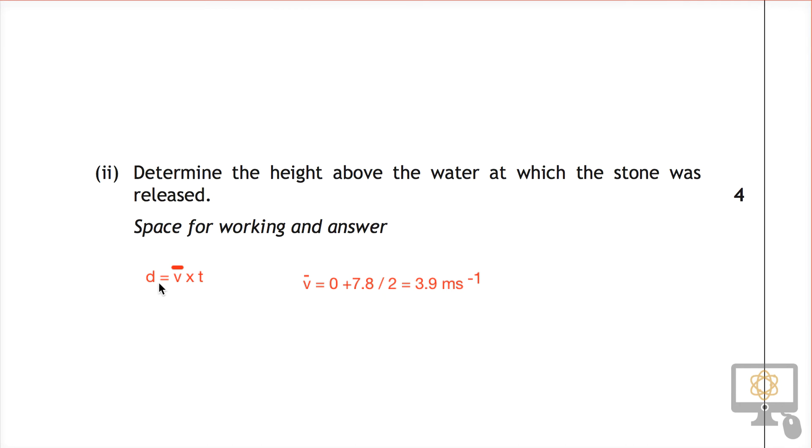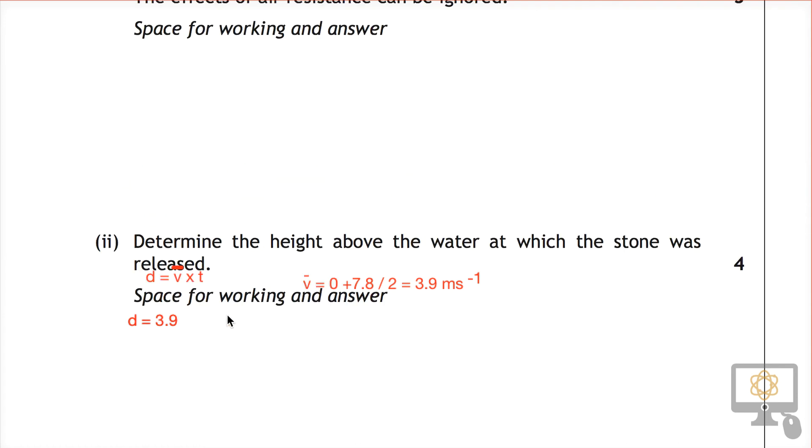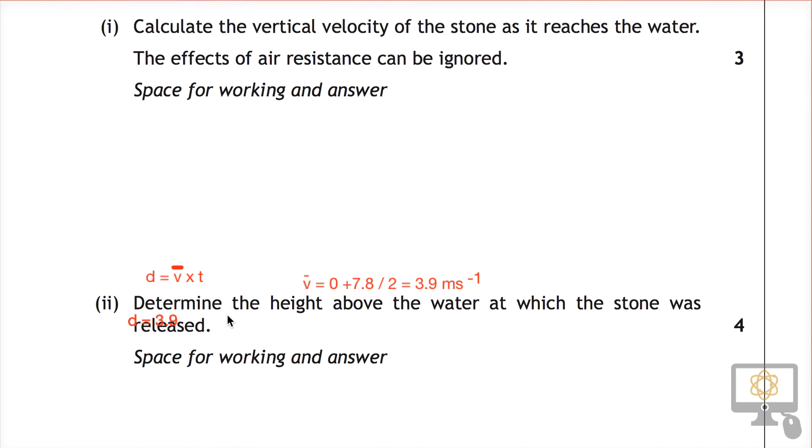Now we can use the formula very easily. If we just write distance is equal to average speed, which is 3.9, multiply by time, and the time from above was 0.80 seconds.